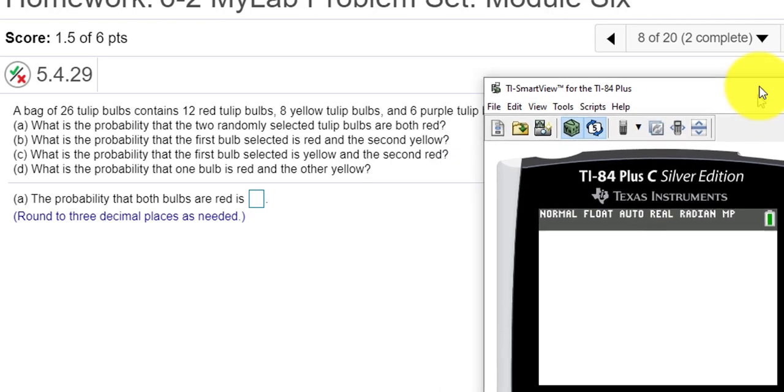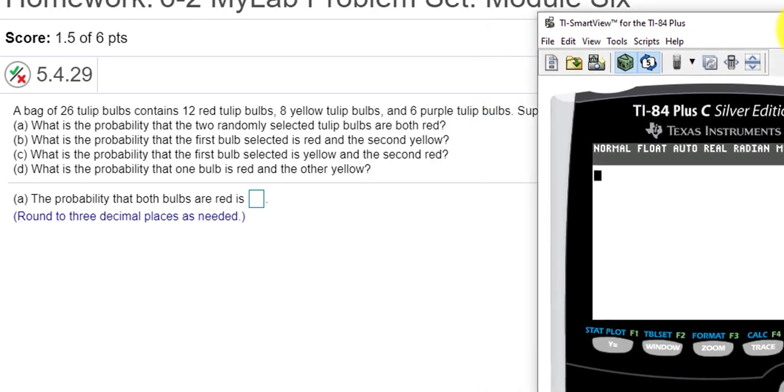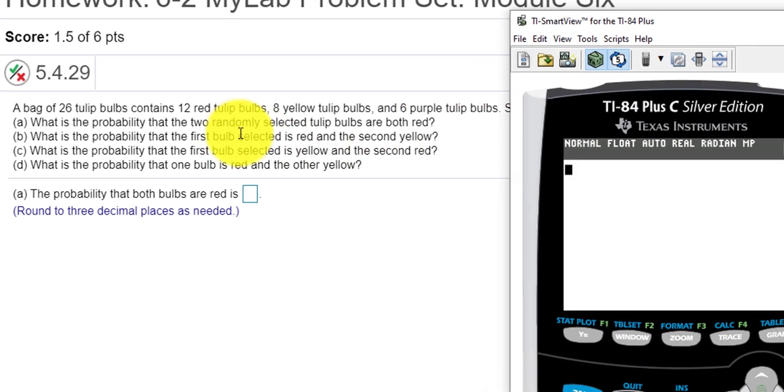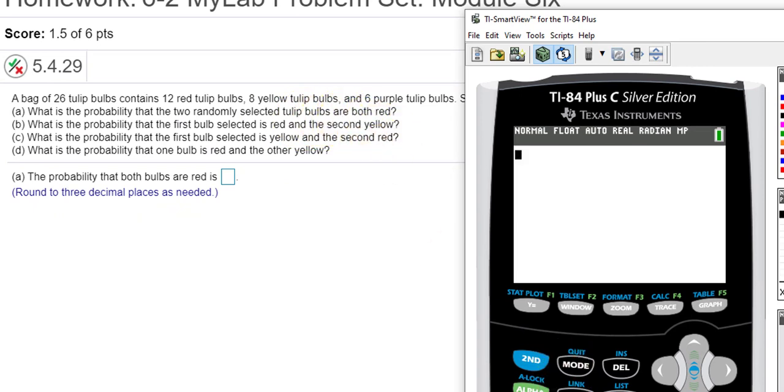It says, what is the probability that two bulbs selected are both red? So the probability that the first one is red would be 12 out of 26, and the probability that the second one would be red would be 11. There'd only be 11 red after we pick one, and there'd only be 25 bulbs left.